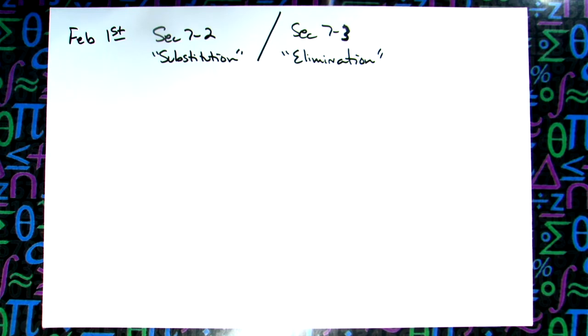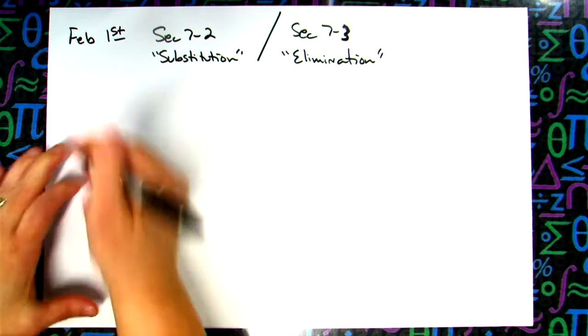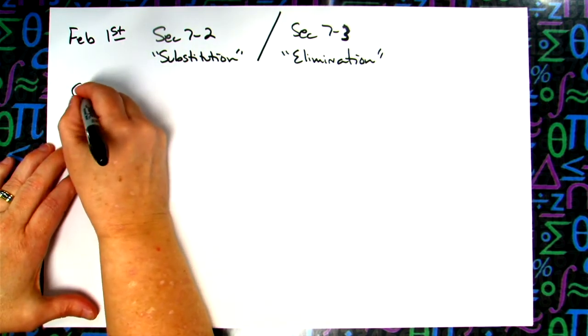And we'll also do section 7-3, which is the elimination method. These are two pretty intense methods for learning how to solve a system of equations. We did one on that first virtual day we had last week where you had to solve a system by graphing, and you had done that in middle school.